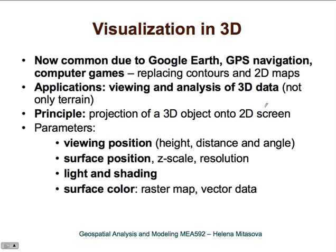Very important and useful tools are manipulation of light and shading. We can also define surface color using raster maps or drape different types of vector data over the surface.